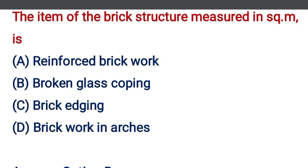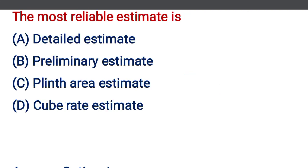The item of brick structure measured in square meters is — option A: reinforced brick wall, option B: broken glass coping, option C: brick edging, option D: brickwork in arches. The correct answer is option B, broken glass coping.